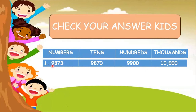Next, thousands. We will find the number in the thousands place, which is number nine. The number to the right of the thousands place is number eight, and it is more than five. So we will add one to nine and make the remaining numbers become zero. The answer is 10,000.